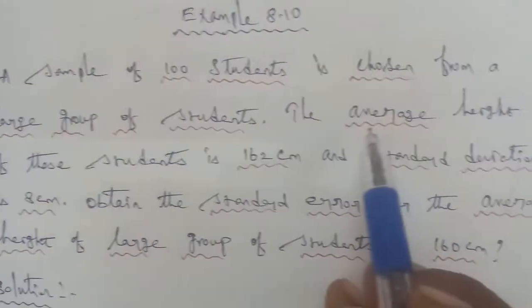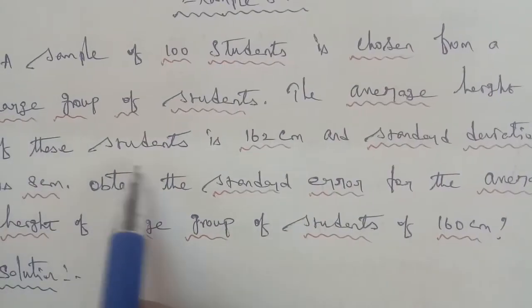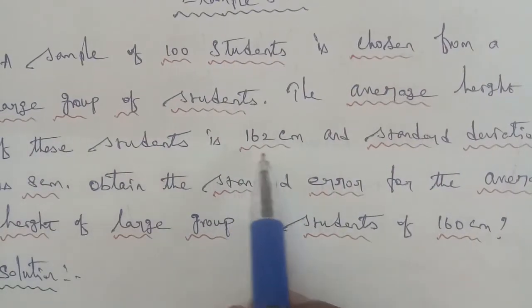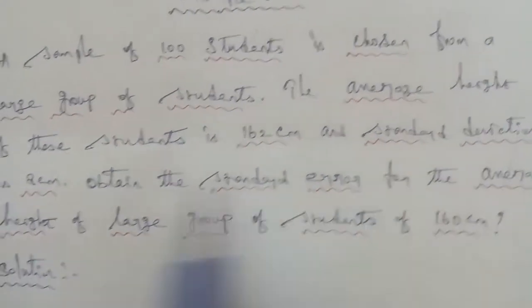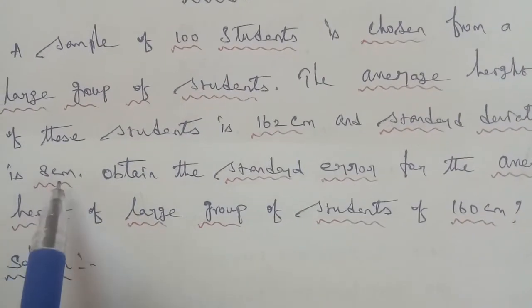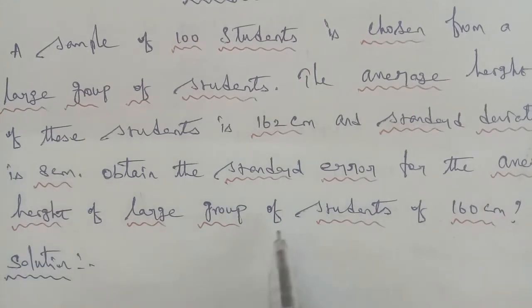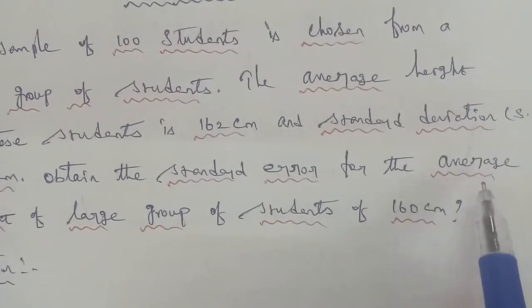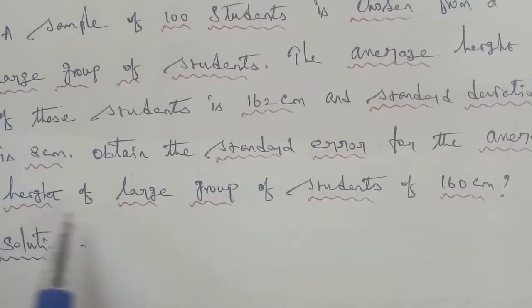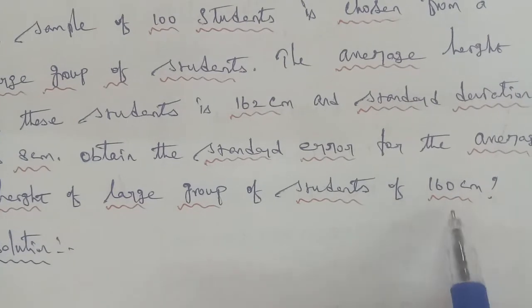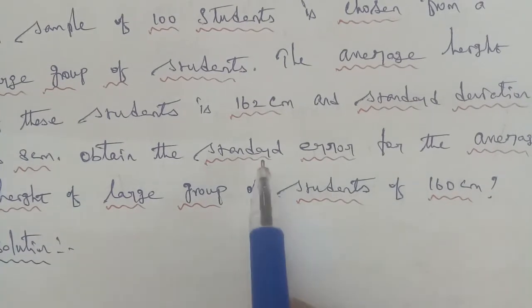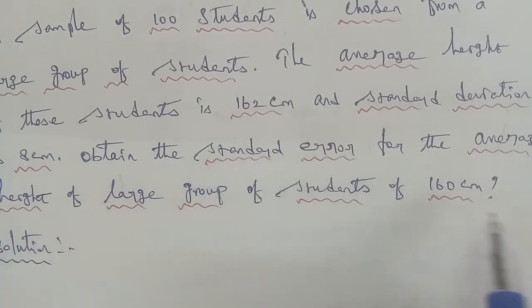So given question: the average height of the students is 162 centimeter and the standard deviation is 8 centimeter. We need to find the average height of the large group of students, which is 160 centimeter. We need to find the standard error.